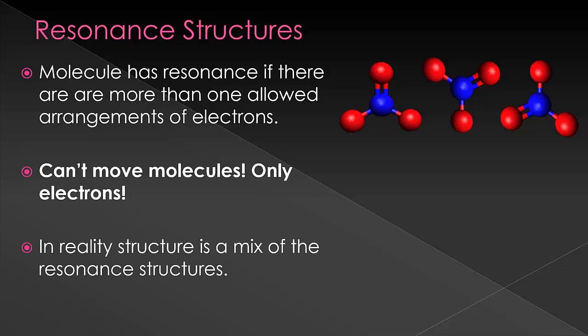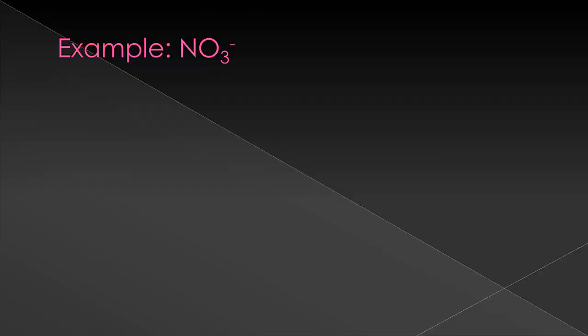So let's look at an example. We will take the example of the NO3 minus ion, the nitrate ion. So we have nitrogen with 5 electrons and each oxygen which has 6 electrons. We also have to remember to add in 1 because of the negative charge, leaving us with 24 electrons to work with.